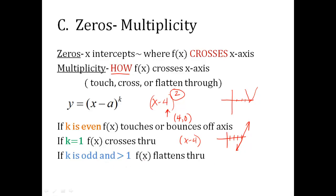If it was odd and greater than 1, so let's say it was a 3, odd and greater than 1, that means it's going to flatten through that point. It's going to look something like this. It flattens a little bit. It doesn't just go straight through. It flattens. So you have to factor and you have to look at the power of that factor to determine how it's going to cross. And that's what we call multiplicity.